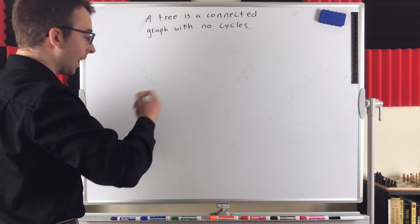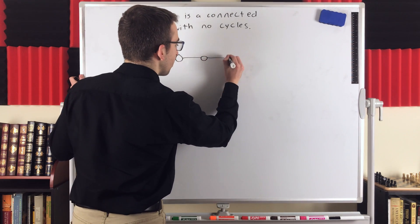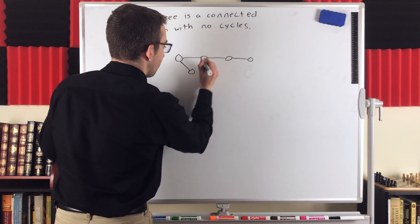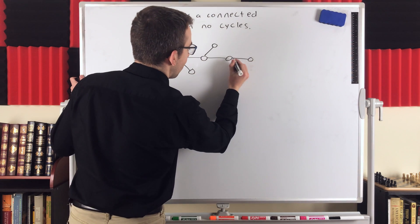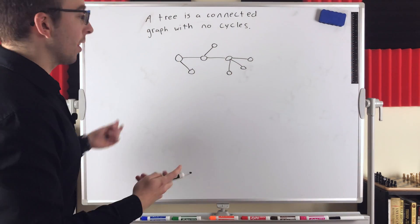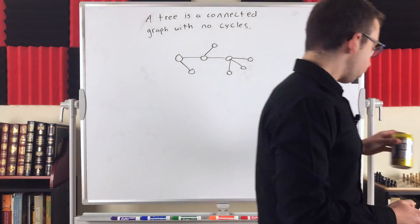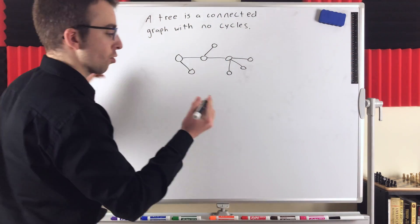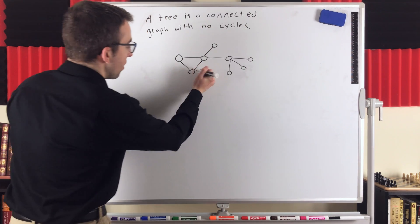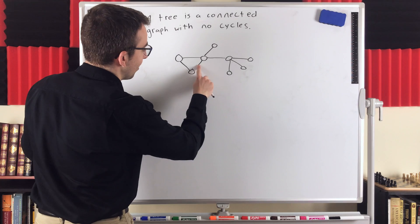But so let's go ahead and see an example of a tree. Again, it's a connected graph with no cycles. So here's an example of just such a graph. This graph is connected, and we see that it has no cycles. So it's called acyclic. It's got no cycles. So it would not be a tree if we were to, say, add an edge right there. Then we've got a cycle.